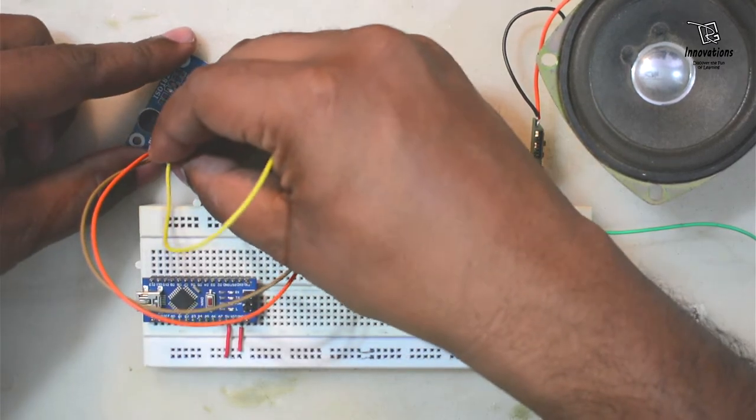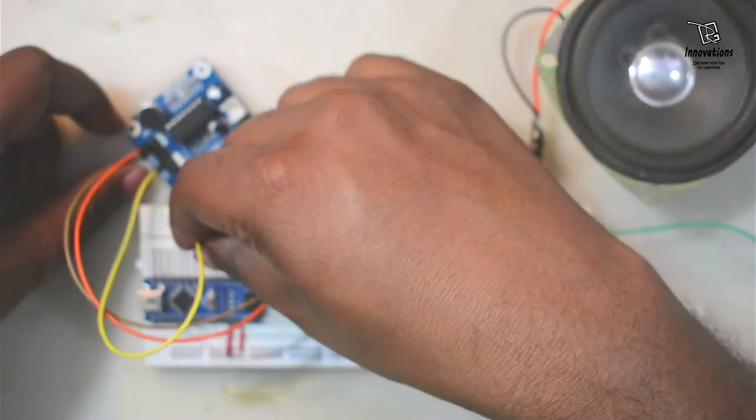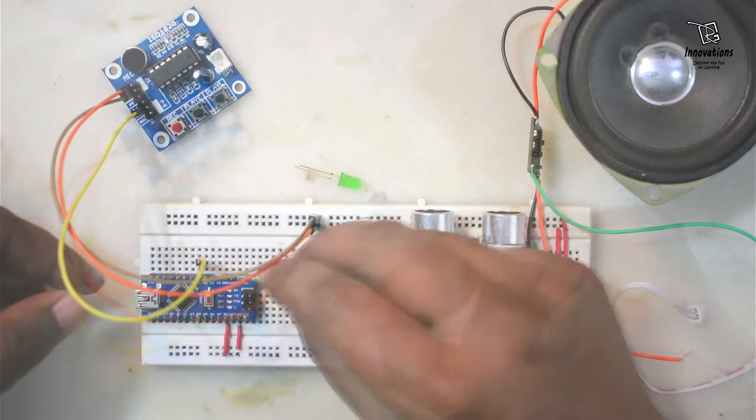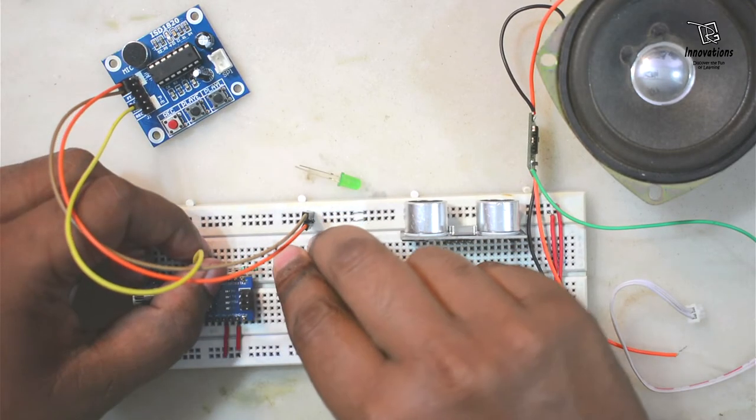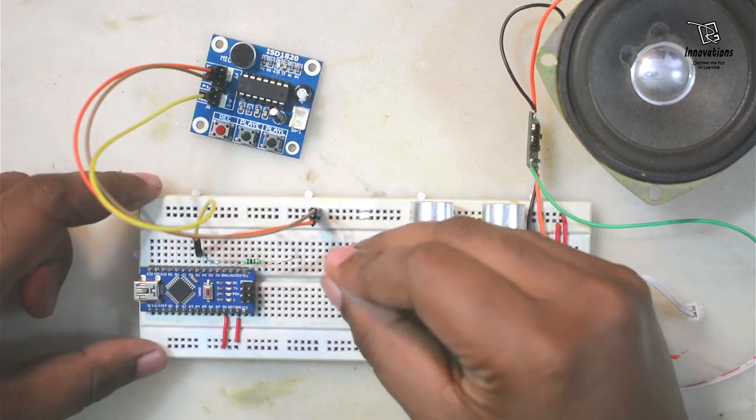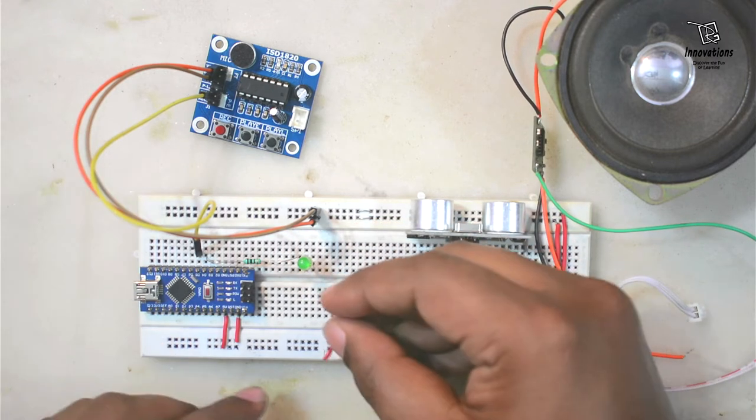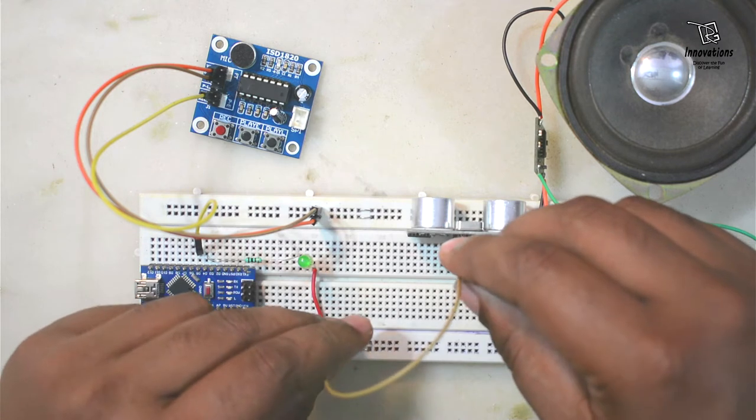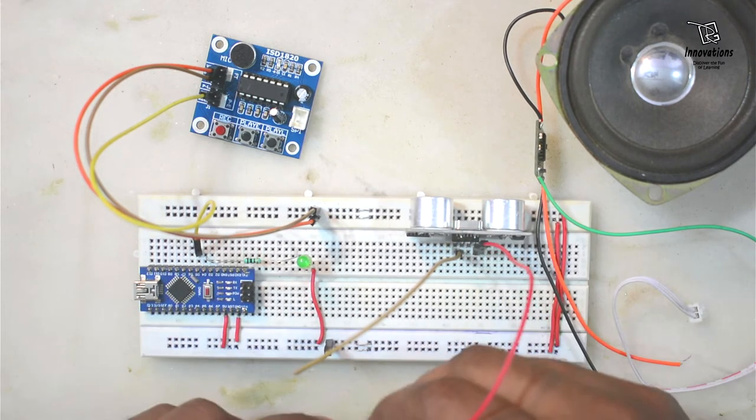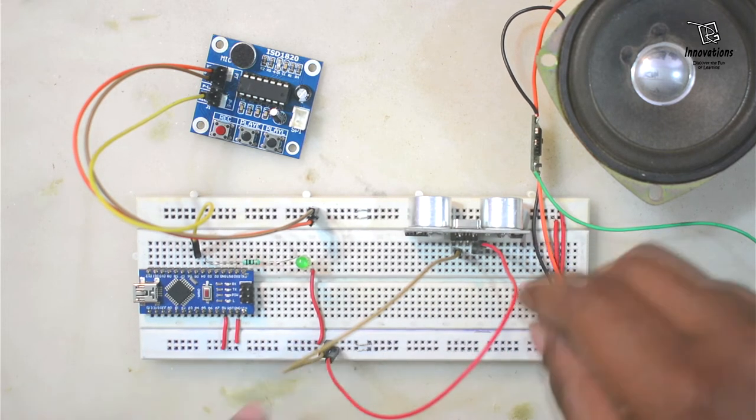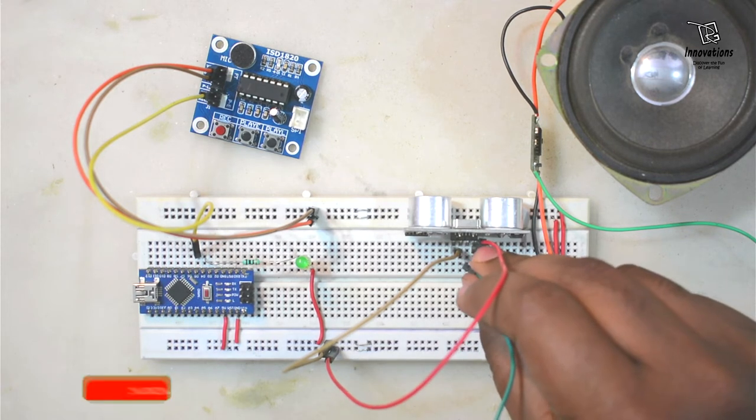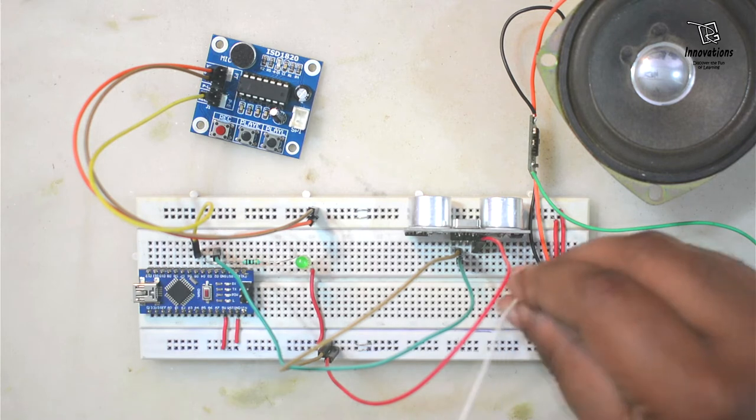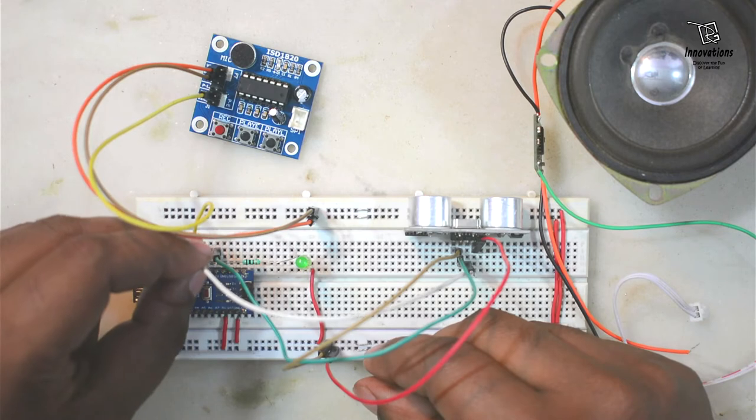Now I am connecting the PE pin of the ISD1820 module to digital pin number 5 or D5 of the Arduino. D4 pin I will use for the LED, so connecting a 100 ohm resistance with pin number 4, and now I will connect an LED. The cathode pin of the LED will be connected to the ground pin. Connecting the VCC pin of the ultrasonic sensor to the 5V output pin of the Arduino. Now connecting the echo pin to Arduino pin number 2 or D2, and connecting the trigger pin of the ultrasonic sensor to pin number 3 or D3.